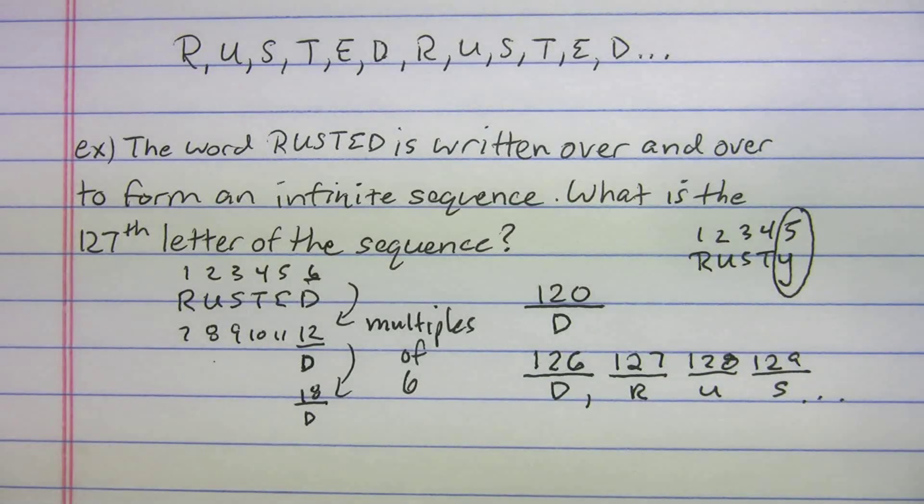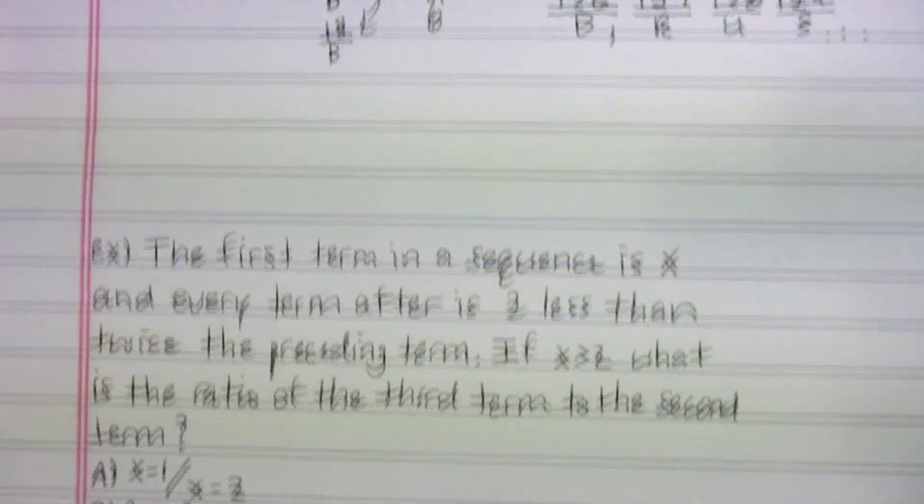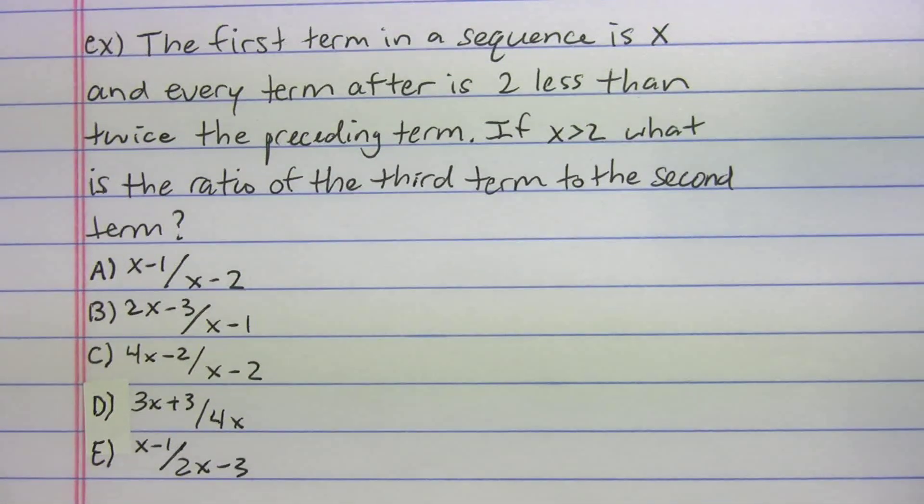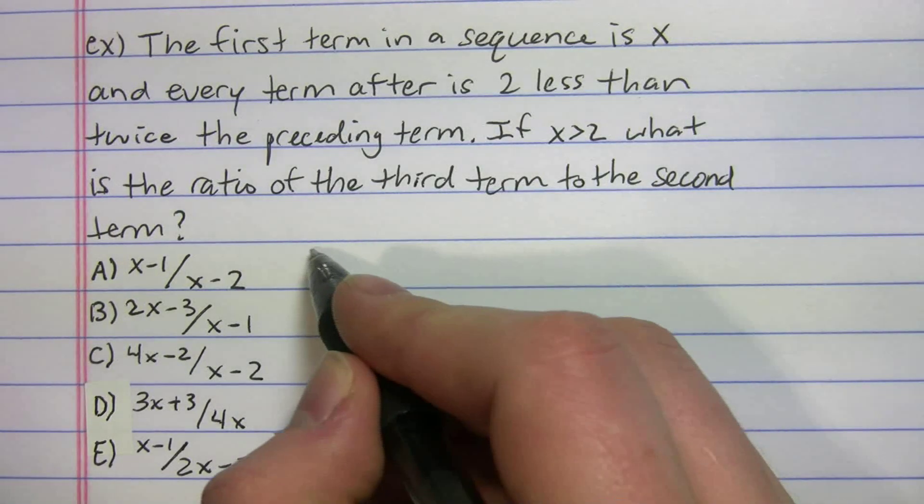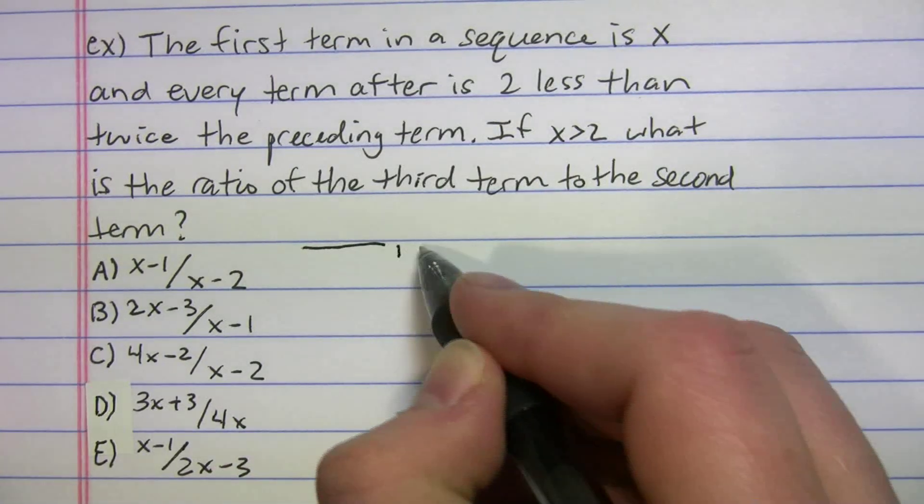Let's look at another one. This one says the first term in a sequence is X and every term after is two less than twice the preceding term. If X is greater than two, what is the ratio of the third term to the second term? When you get a sequence question like this, one of the best things you can do is put in your slots.